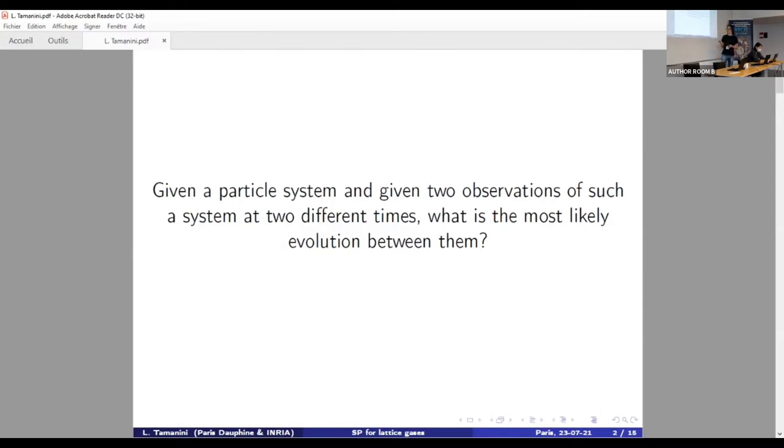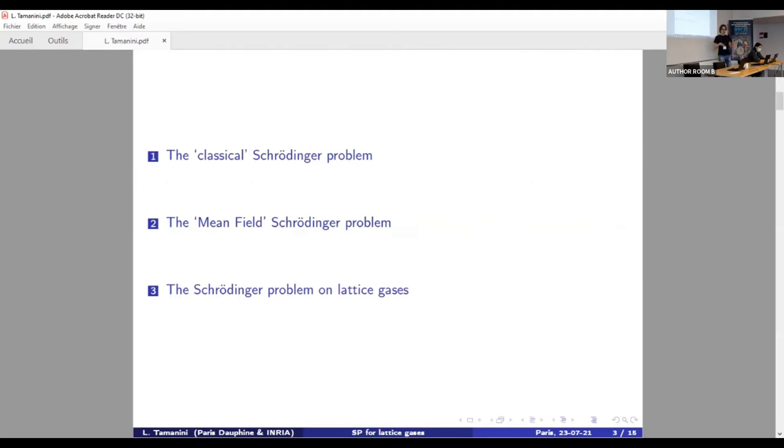And to answer this question, I will rely on what is called Schrödinger problem, which was formulated in 1931 by Schrödinger for a very specific case of a particle system, which however is quite unsatisfying from a physical standpoint. So for this reason, I will also briefly discuss a more recent step forward taken a few years ago, which is the mean field Schrödinger problem. And based on this solid and rigorous background, I will finally talk about a heuristic formulation, a heuristic Schrödinger problem for lattice gases.